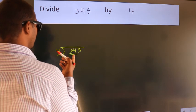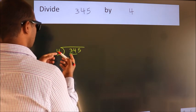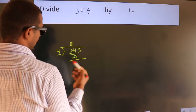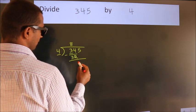A number close to 34 in 4 table is 4 times 8, 32. Now we should subtract. We get 2.